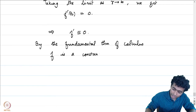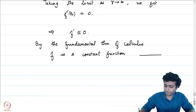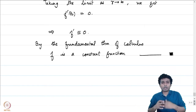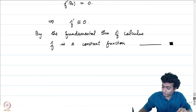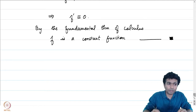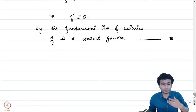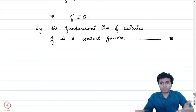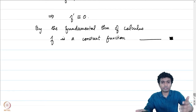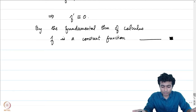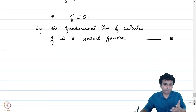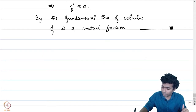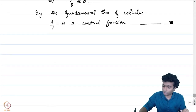So bounded entire functions are necessarily constants. This is in stark contrast to the real analysis setting: on the real line, we have functions like sin x, which is real analytic and bounded by 1. That cannot happen in the complex setting — the moment we have an entire function which is bounded, it is forced to be a constant function.